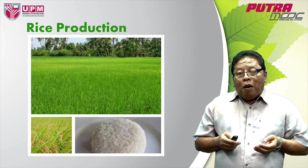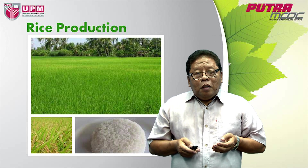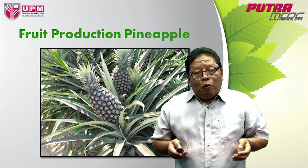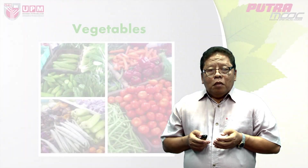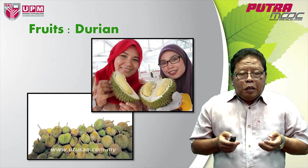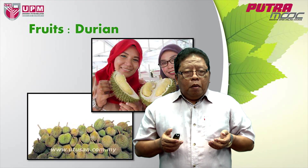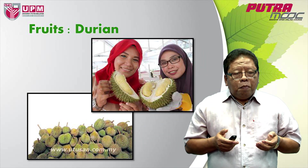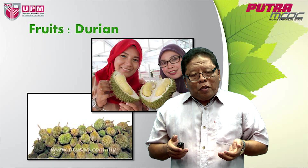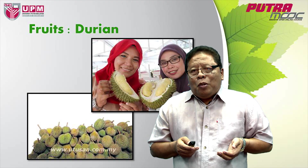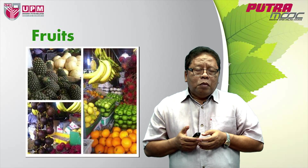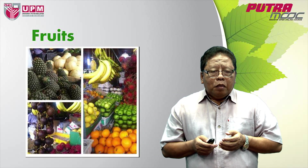This is rice farm — a staple food for most people in Asia. This is pineapple, one of the horticulture crops, also very common in the tropics. These are vegetable crops, also classified as horticulture crops. And these are some of the fruits you will find. This fruit is called durian — some people describe it as 'tastes like heaven, smells like hell.' Some people like it so much, while others just cannot come close to it because of the smell. And these are colourful and very tasty, delicious fruits that you can find everywhere in the world.